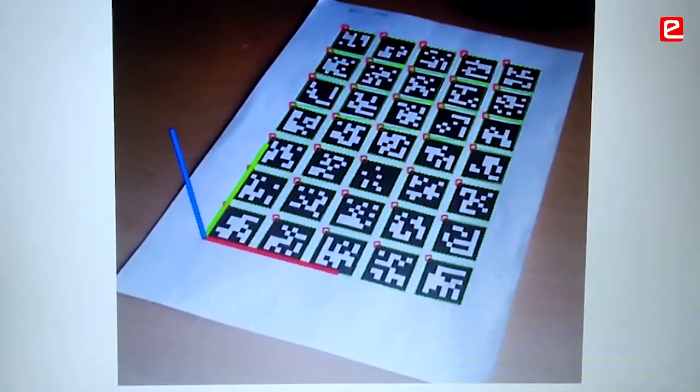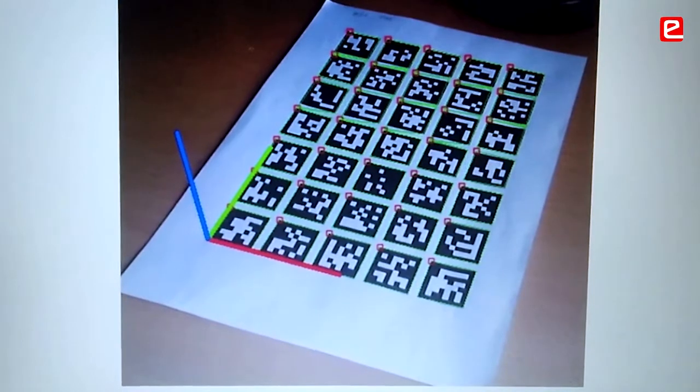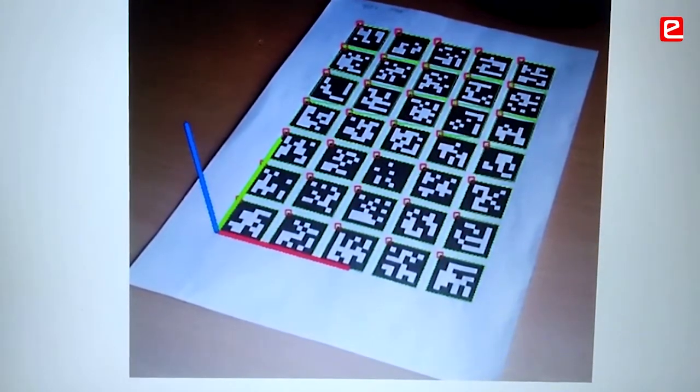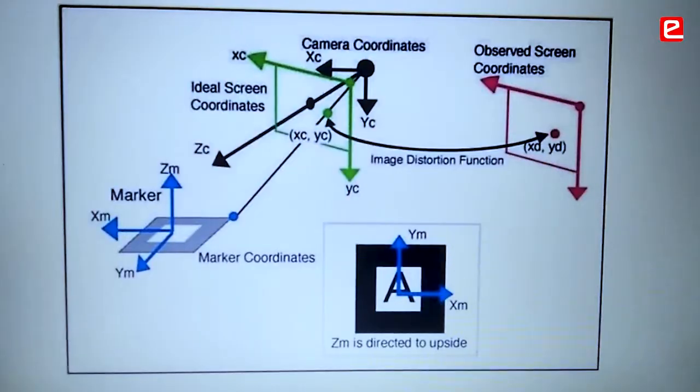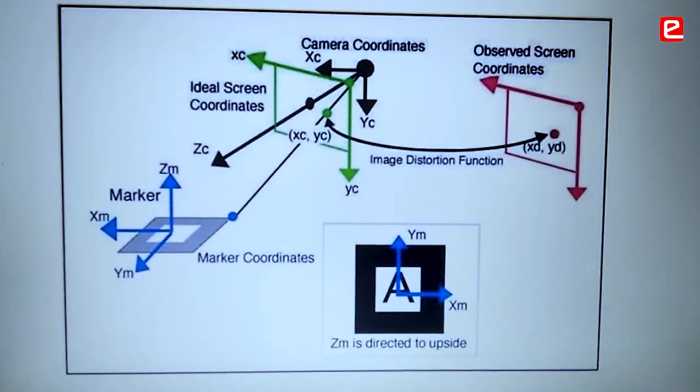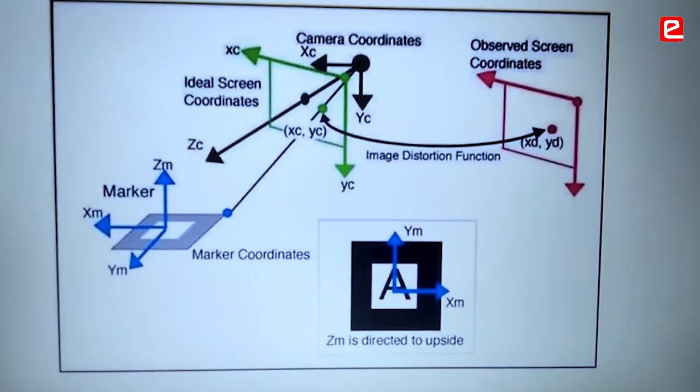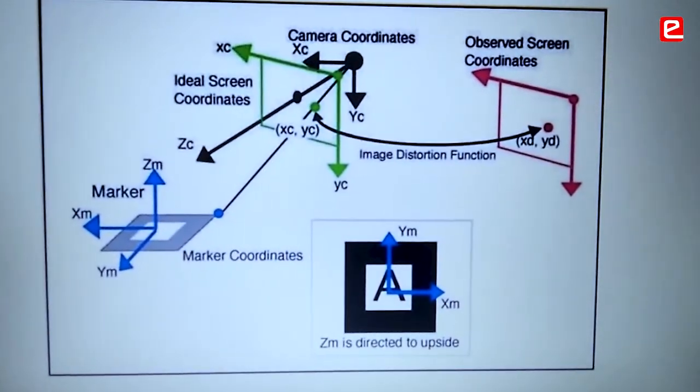Pose estimation gives us its orientation and distance from camera. The last step is distance calculation. Distance calculation can be done by using rvec and tvec. We have to Rodrigues transform the rvec which will give us a three by three matrix.